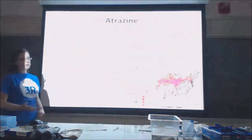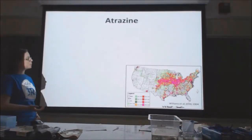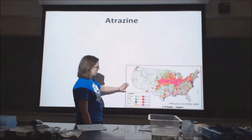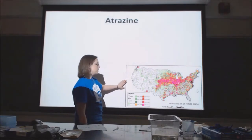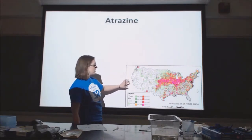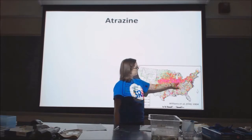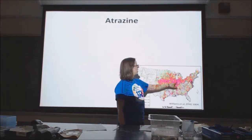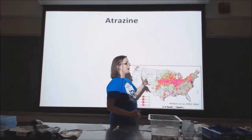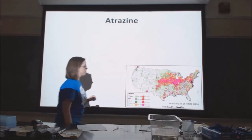You may wonder why I chose the weed killer atrazine. This is a map of the United States showing atrazine use in 2004 that I got from the EPA. The fuchsia/magenta color in the middle shows where atrazine is used at higher levels — you can see it's used a lot in agriculture in the Midwest.